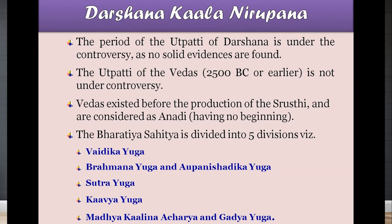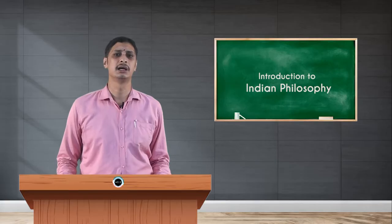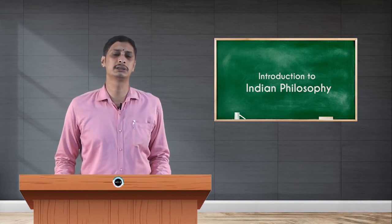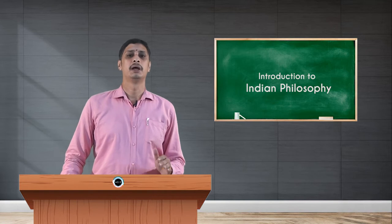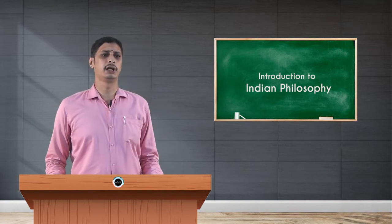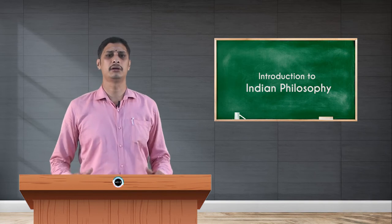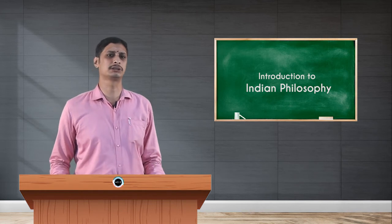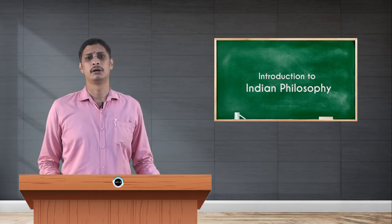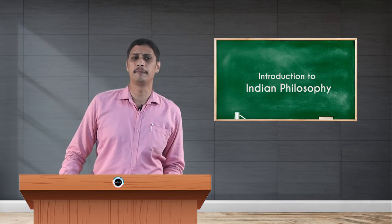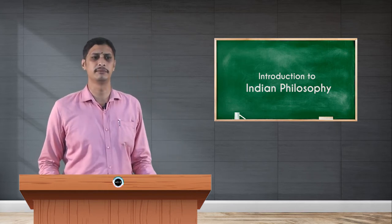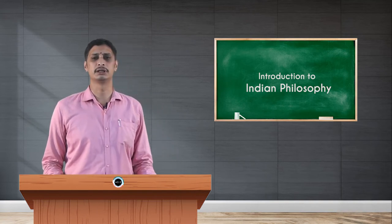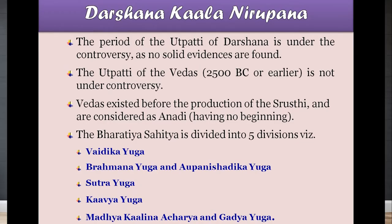Those Ananta Vedas are the reliable source for each Darsana. Darsanas have main points with the Pramanas — Pramana means evidence. With that basic evidence they focus on Prameyas or objects. In Indian history, different philosophies have been focused in each Yuga. Bharatiya Sahitya is divided into five divisions. All Indian literature is divided into five divisions, starting with Vaidika Yuga.